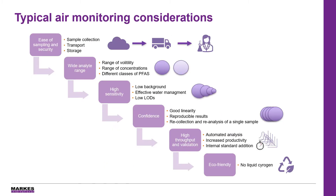There are a number of considerations to take into account when carrying out air monitoring procedures. These are relevant for traditional TD GCMS VOC methods, for example TO17, as well as for reliably quantitating emerging contaminants such as PFAS. The ease and reliability of sampling procedures is key to ensure confidence in your results, combined with the need to securely transport your sample from the field to the laboratory.